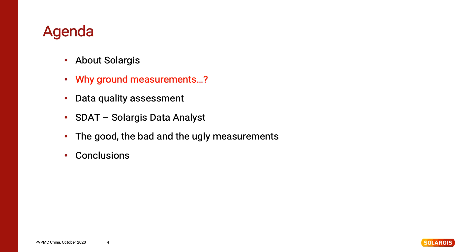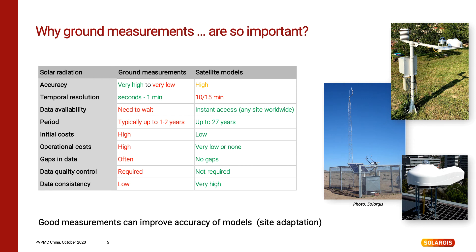So first let's explain why ground measurements are so important. There are differences between the measured and satellite modeled data. Accuracy of satellite data is high, especially after site adaptation, which is a correlation of satellite data with high quality ground measurements. Temporal resolution of satellite data is 10 or 15 minutes, which is usually more than enough for the majority of cases. Up to 27 years of data is available for download for almost any site in the world, in high consistency and without gaps.